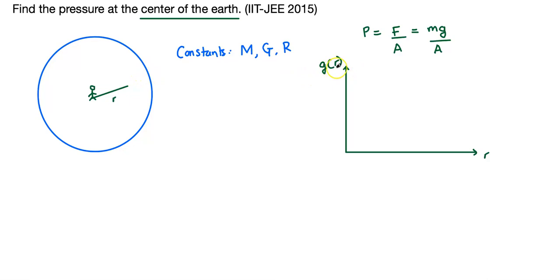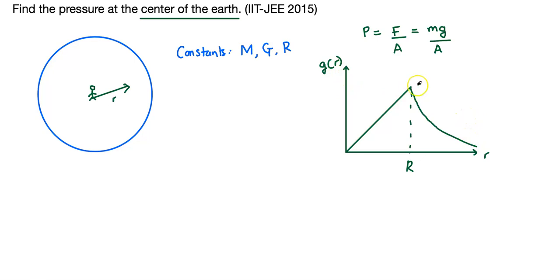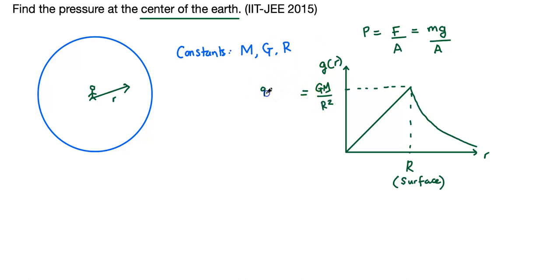How does acceleration due to gravity vary as a function of r? It varies linearly inside the Earth until you reach the surface, and from there on it starts dropping as 1/r². On the surface at r = R, g equals the well-known value of 9.8 m/s², which in terms of constants is GM/R². When you substitute r = 0, which is the center of the Earth, g equals zero because it varies linearly from zero up to GM/R².